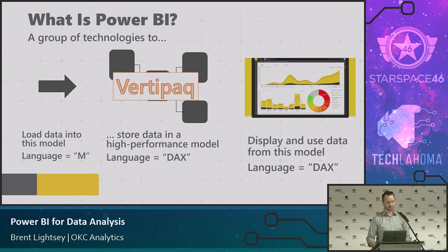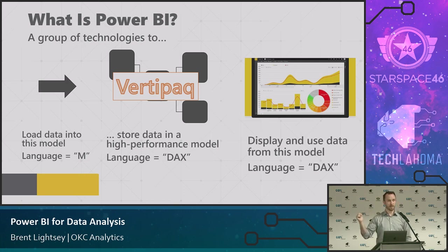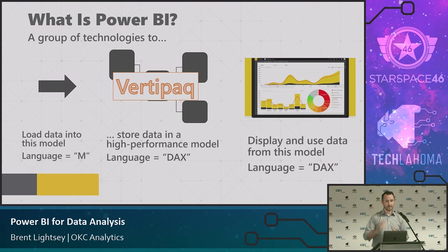That database is called VertiPaq — useful to know for Google searching. It first appeared in Analysis Services, then they created an Excel plugin called Power Pivot — exactly the same database. That language M came out with Power Pivot as an Excel add-on, then became part of core Excel. If you have Excel 2016 or later and say 'get data,' you're opening a query editor for M, and you'll end up using DAX when you query the loaded data.